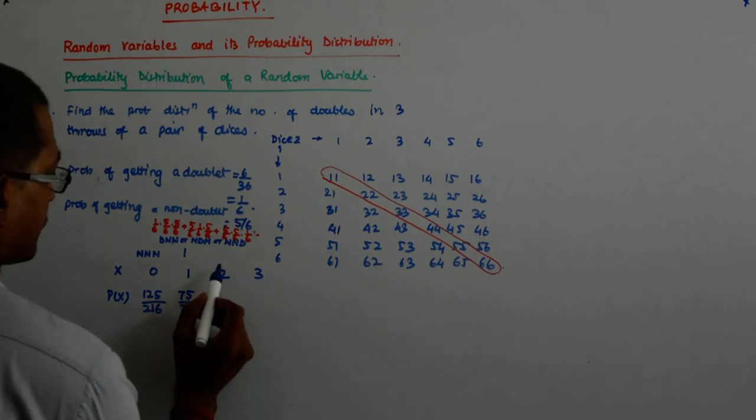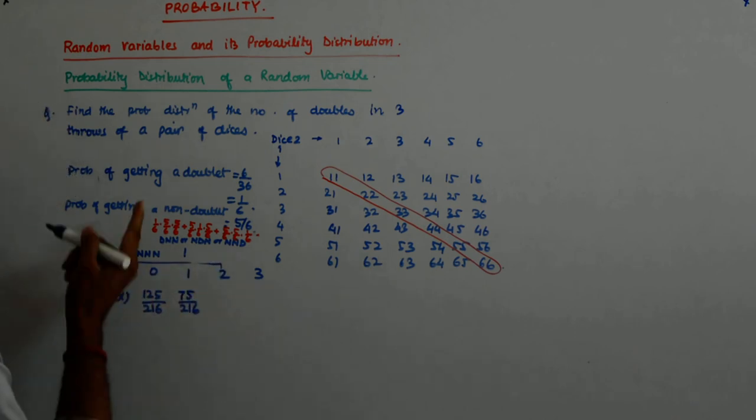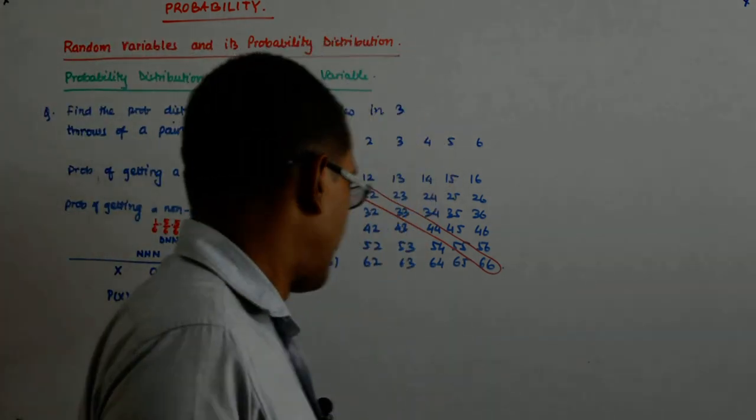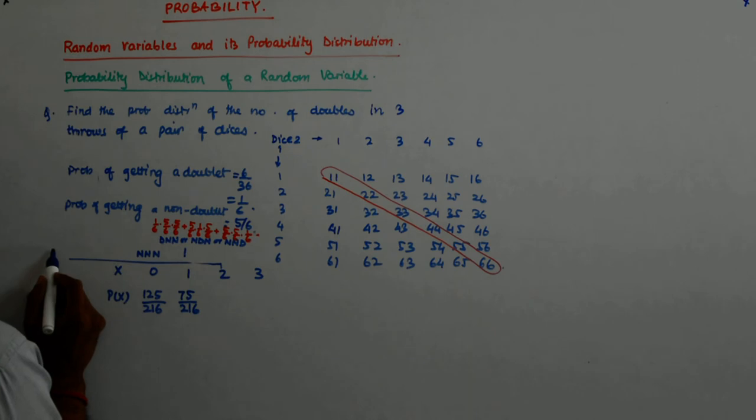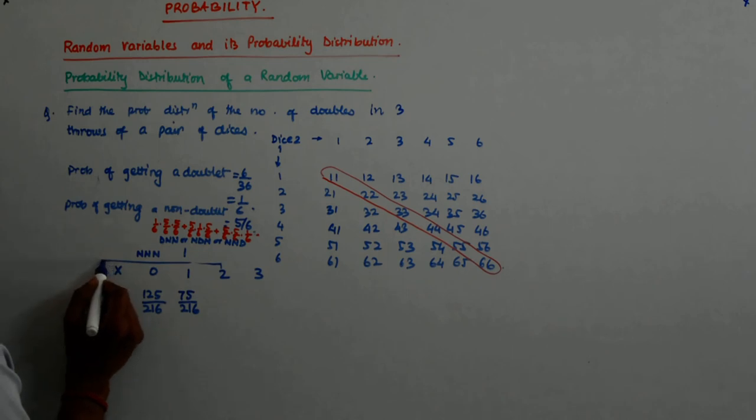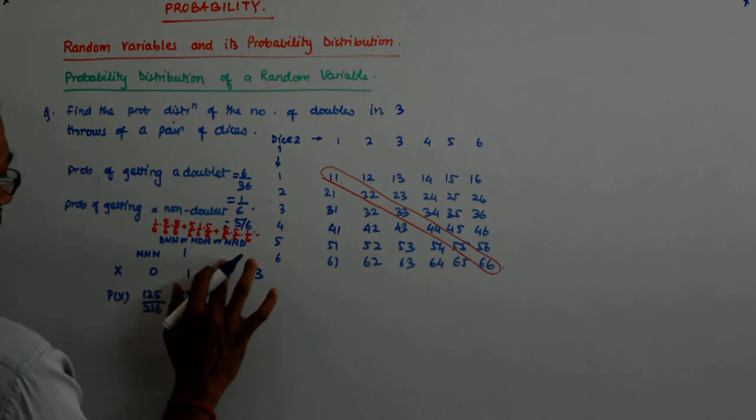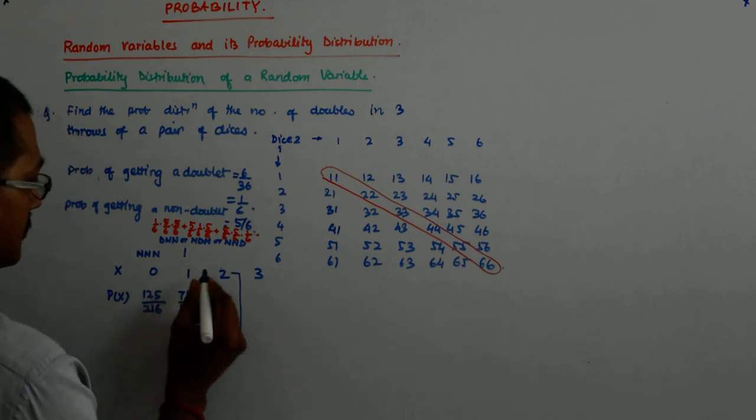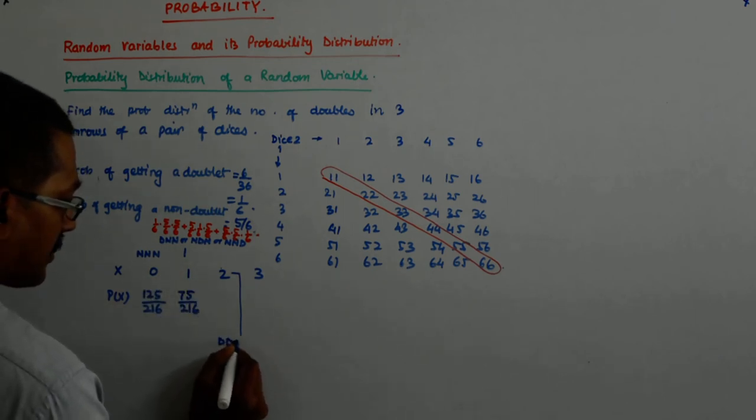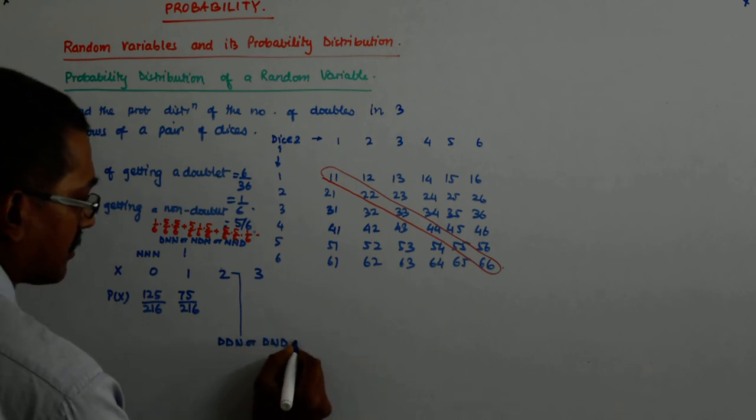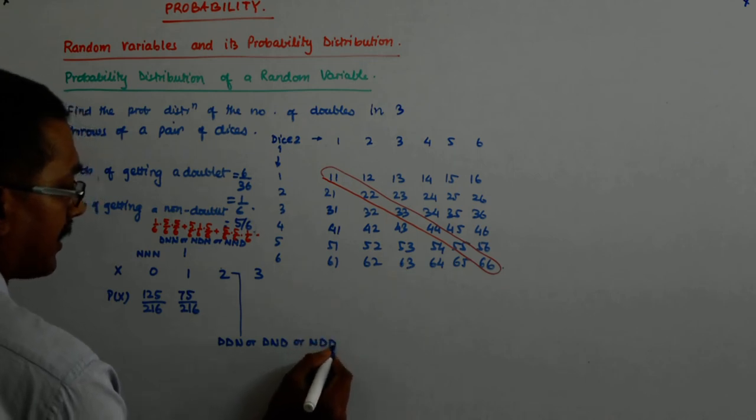Let us calculate for this two doublet. See, I am writing like these arrows and here and there. You will be writing it properly. Okay? So here it is. So how do we go about this? I am doing it here. So I get a doublet, doublet, non-doublet, or doublet, non-doublet, doublet, or non-doublet, doublet, doublet.